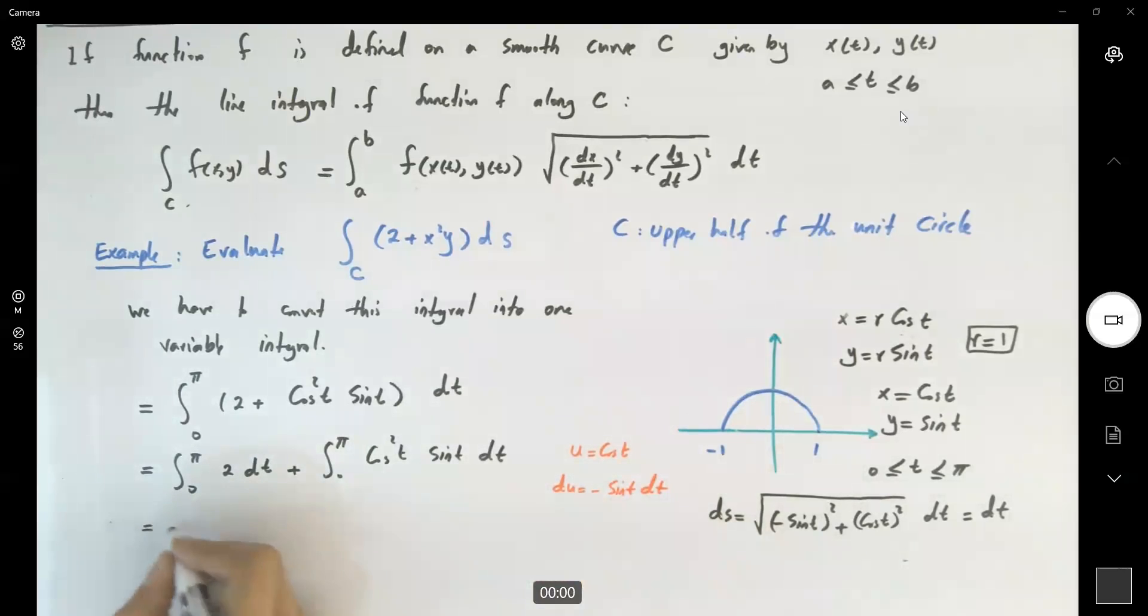So here you have 2 pi minus, you have a half cosine squared t between 0 to pi. So we get 2 pi minus a half. So here you have cosine squared of pi, cosine squared of 0 minus 1 or 2 pi plus. And here you have a third not two because you already have u. Okay, negative a third.